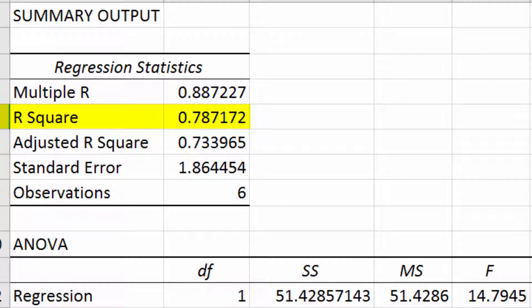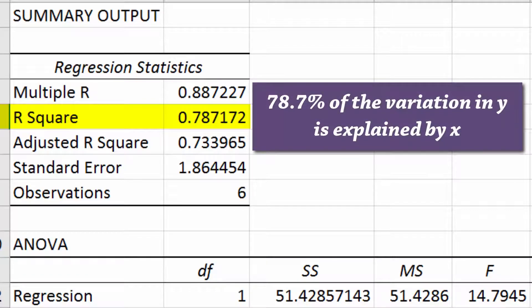Next, we have the coefficient of determination r squared, which tells us the percent of variation in Y explained by the regression. So in this case, 78.7% of the variation in Y is explained by X, and 21.3% is unexplained.